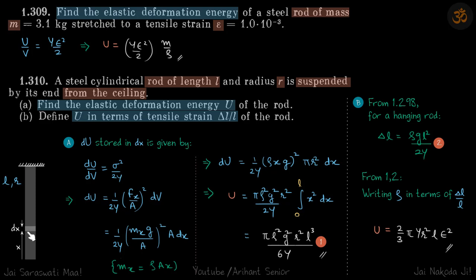We can write the elastic energy stored as dU by dV is equal to sigma squared by 2Y. The sigma squared is the strain at this point, and we know strain at this point is given by Fx, which is the tension at this point.